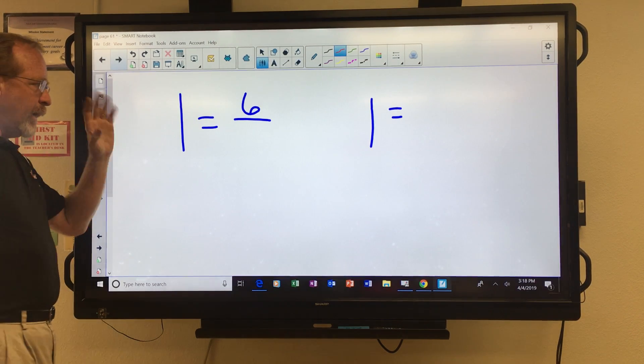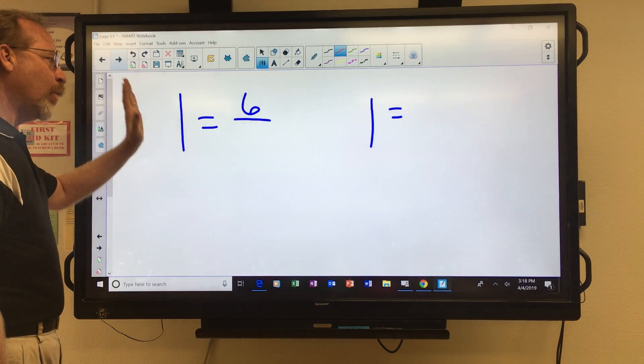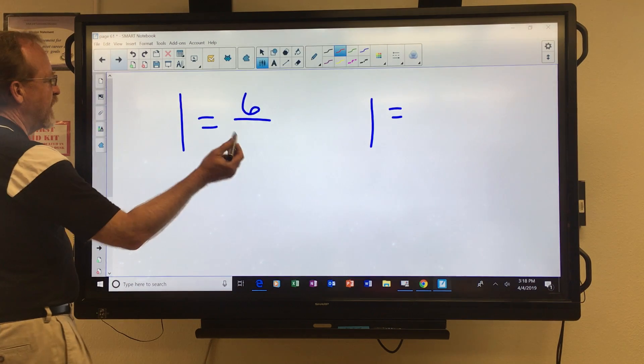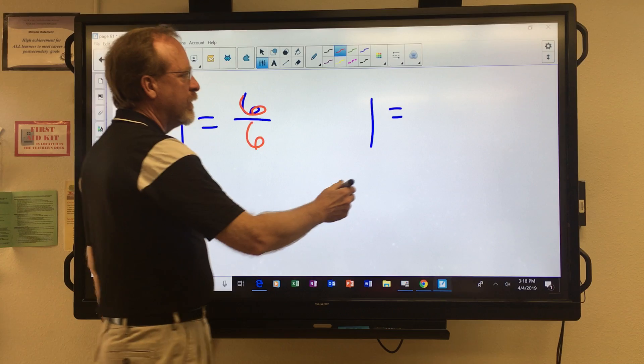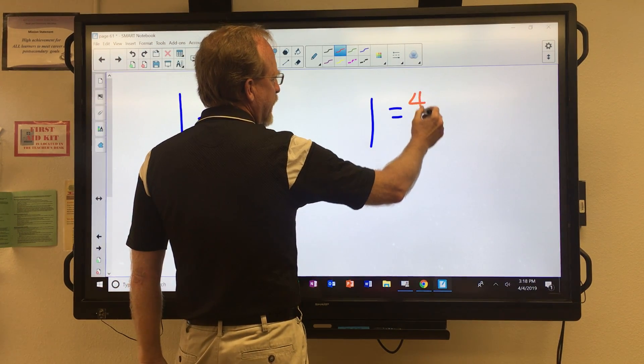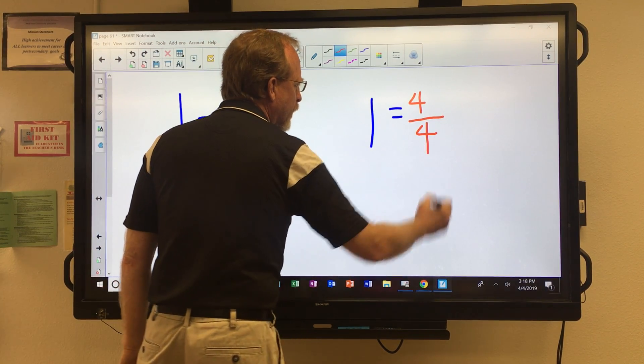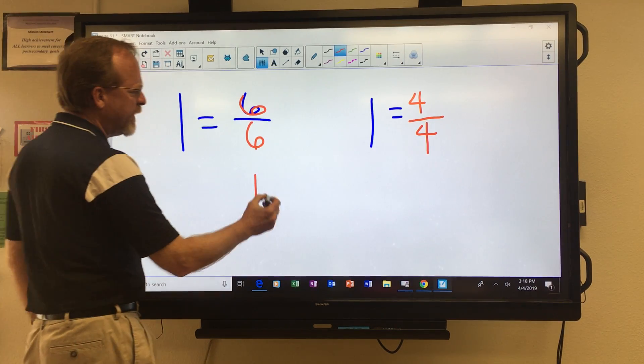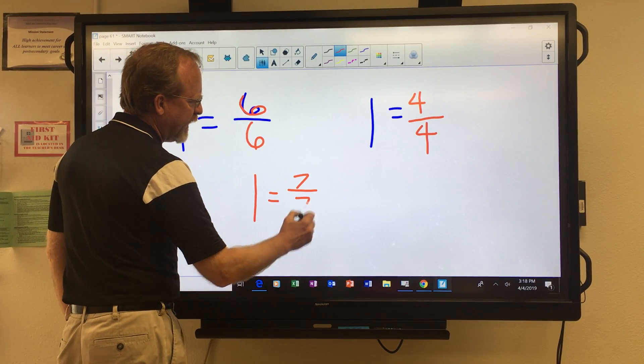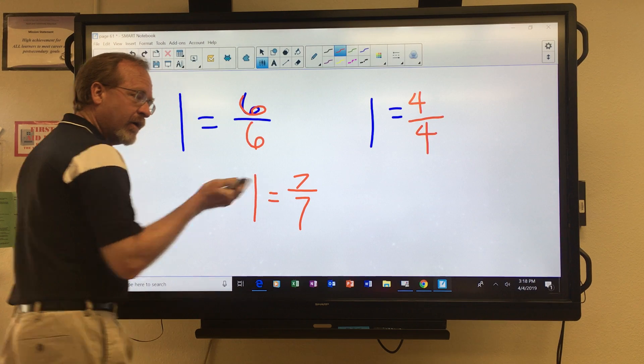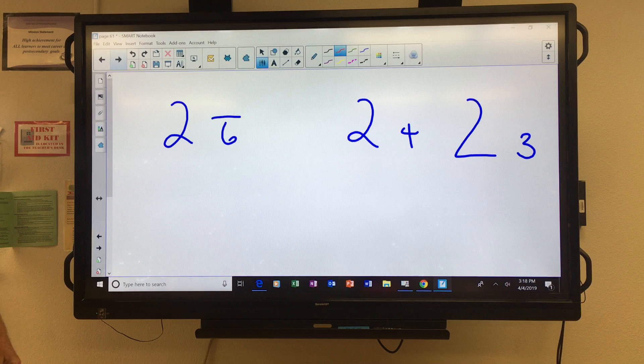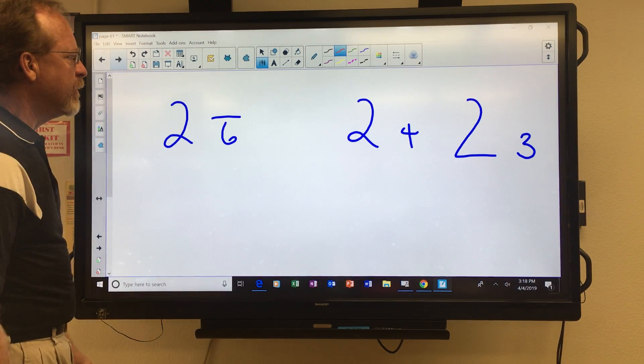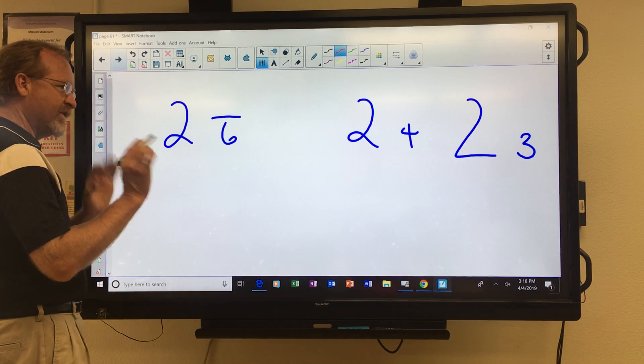Now, important thing to remember, one is the same thing as six over six. One is the same thing as four over four. In fact, one can be anything over anything, as long as the same two numbers that you would like it to be. Oh, let me see. What do we got going on here? Now, I'll tell you what. Let's get really tricky.